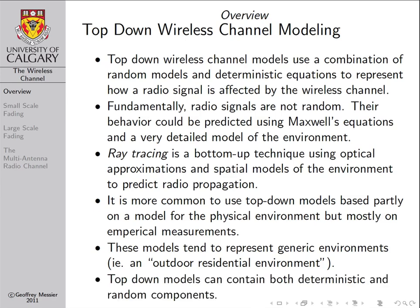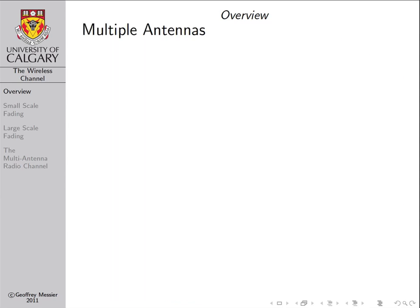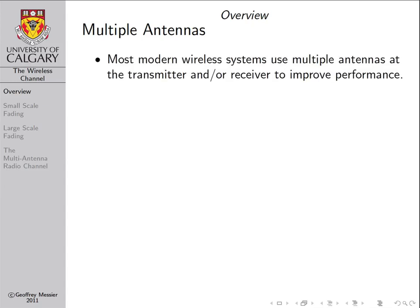Top-down models can contain both deterministic and random components, and we'll talk about that as we get into the material in more detail. Virtually all modern wireless communication systems utilize multiple antennas at either the transmitter, receiver, or sometimes both. The purpose of these antennas is to improve performance — it improves the reliability of a wireless system and can also improve the throughput or data rate.